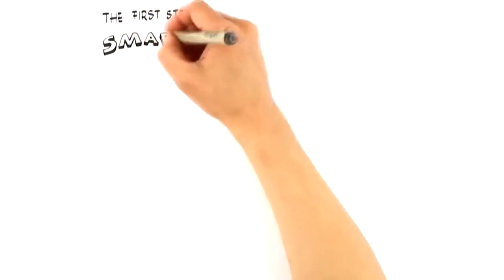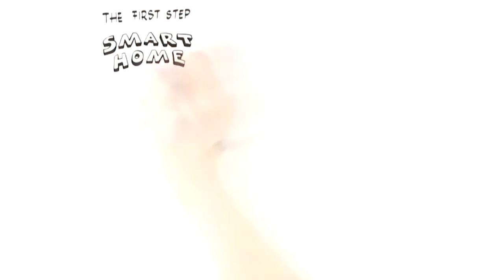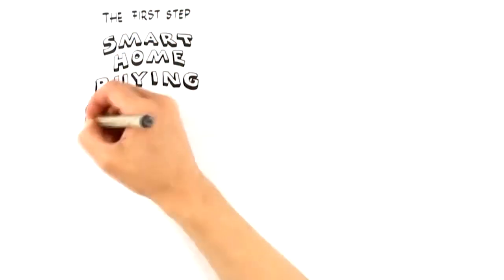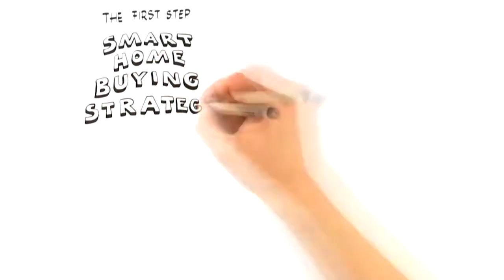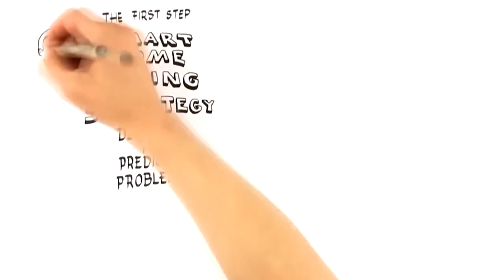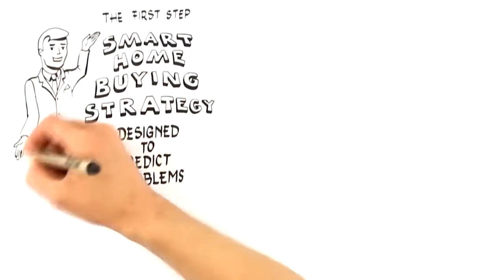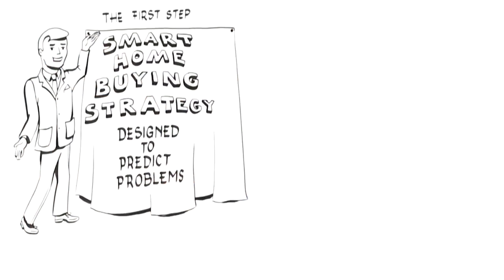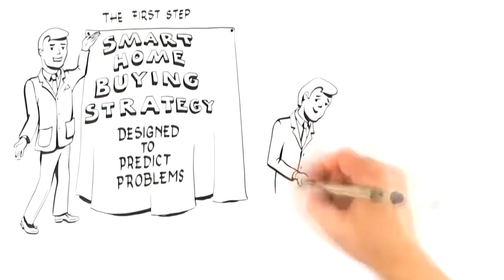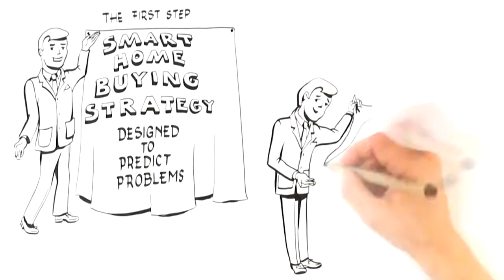The first step to gaining this advantage starts with having a smart home buying strategy. Like any plan or strategy, it is designed to predict problems—in this case, ones that stand in the way of you finding and buying your perfect home. Unfortunately, most buyers don't know they have this option and start the buying process completely wrong.